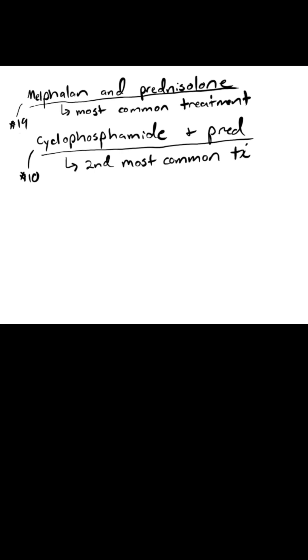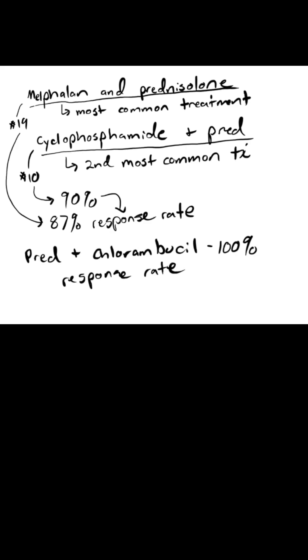The overall response rates to melphalan with prednisolone, cyclophosphamide with prednisolone, and chlorambucil with prednisolone were quite high, at 87%, 90%, and 100% respectively. However, side effects were more common with melphalan, occurring in 65% of cats receiving it, compared to 23% treated with cyclophosphamide. The median survival time was 122 days.